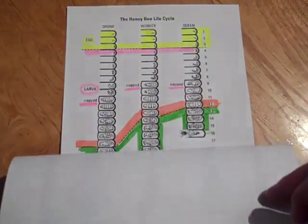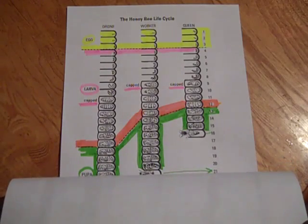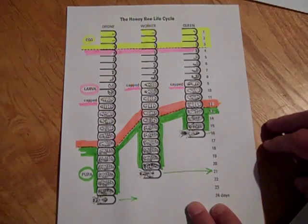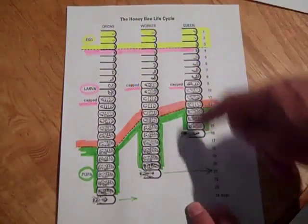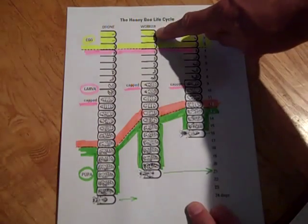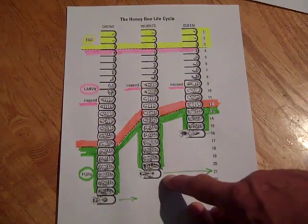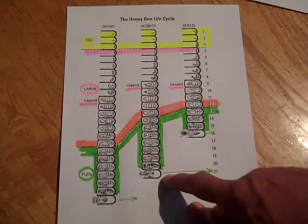These two here I would say are like around day 16 or 17. So when I talk about the life cycle, we're talking about the worker bee life cycle of 21 days from the time that the egg is laid to the time it emerges at 21 days. That's the cycle that we're most focused on.